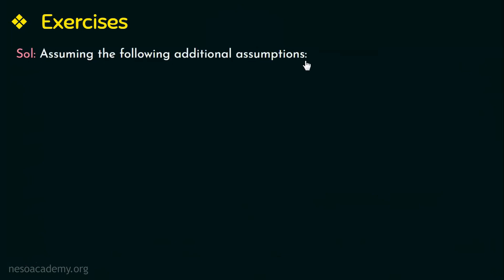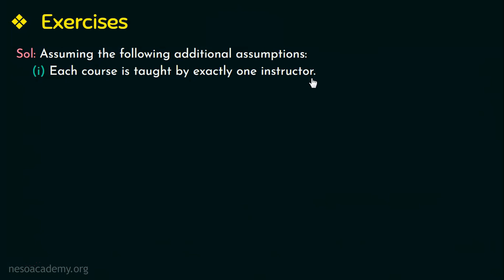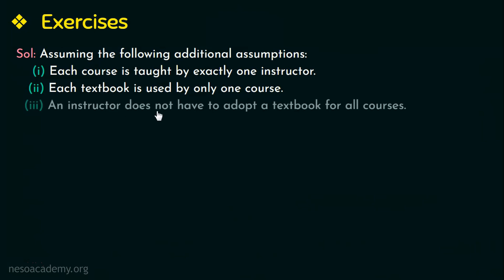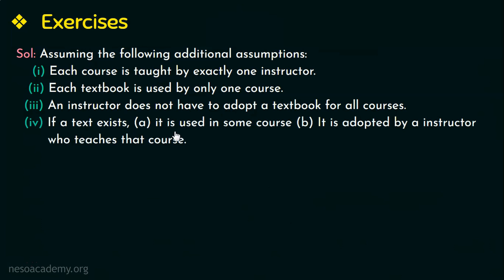Assuming the following additional assumptions: the first is each course is taught by exactly one instructor — one course, for example DBMS, can be taught by only one instructor. The next assumption is each textbook is used by only one course — a textbook named Fundamentals of Database Systems can be used by only the DBMS course. The third assumption is an instructor does not have to adopt a textbook for all courses. The last assumption is if a text exists, it is used in some course, and that textbook can be adopted only by the instructor who teaches that course.